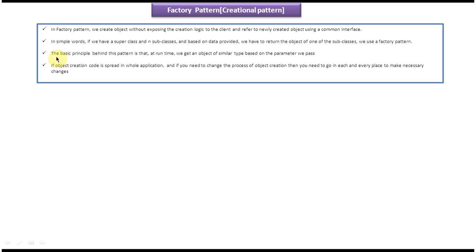And the third explanation: the basic principle behind this pattern is that at runtime, we get an object of similar type based on the parameter we pass. And the fourth and final explanation: if object creation code is spread in the whole application and if you need to change the process of object creation, then you need to go in each and every place to make necessary changes.